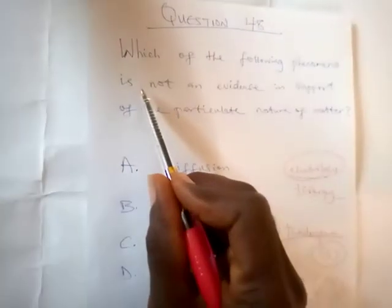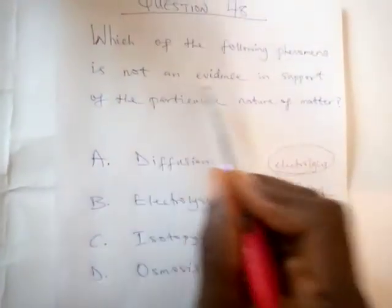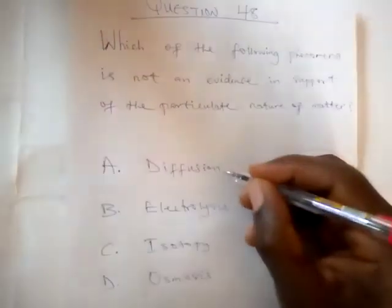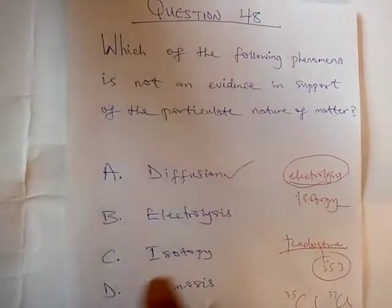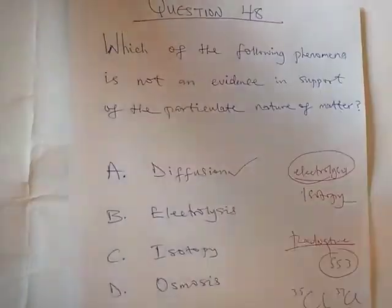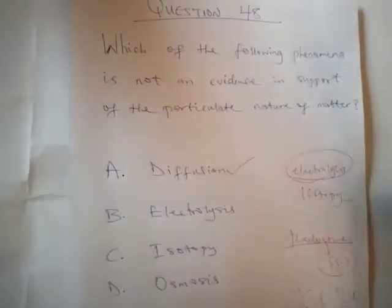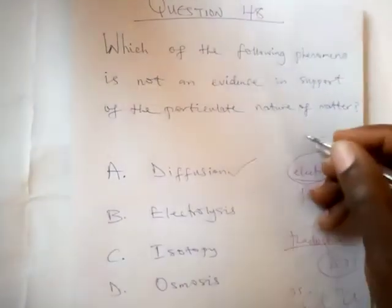Phenomenon, which of the following phenomena is not an evidence, the one that is not an evidence. Diffusion will be an evidence because all matter will diffuse. Diffusion is movement of a particle from one point to the other. So gases can diffuse, so diffusion is there.